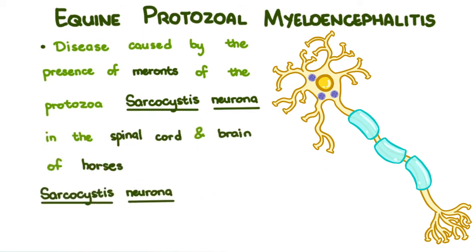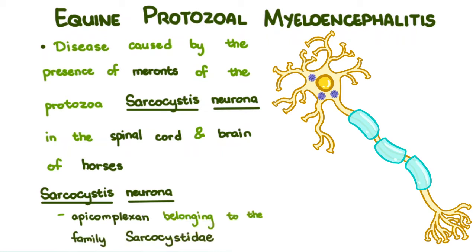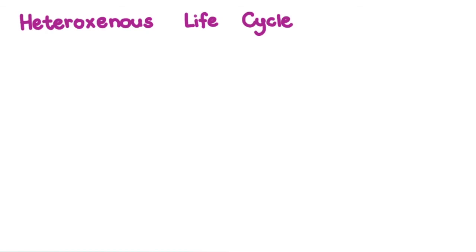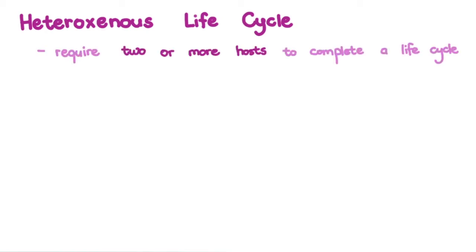Sarcosystis neurona is an apicomplexan belonging to the family Sarcosystidae. Members of this family have a heteroxenous life cycle, meaning they require two hosts to complete a life cycle.